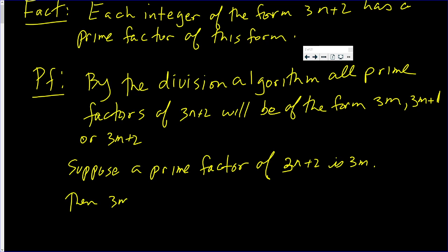Then 3m, being a factor, prime or not, must divide 3n plus 2. But of course, 3 divides 3n. If 3 divides this number, and this number then divides 3n plus 2, then 3 must divide 3n plus 2. But that's absurd.